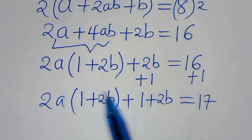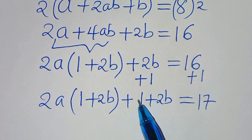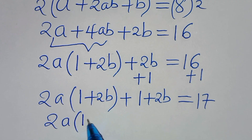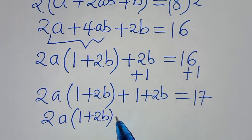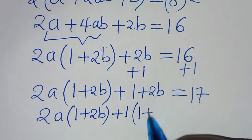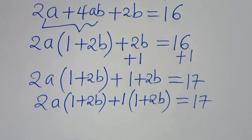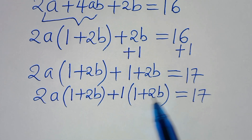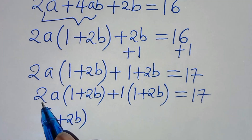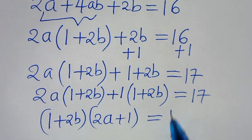We have 1 + 2b here and 1 + 2b here, so we can factor out 1 + 2b, since it is common. So we have 2a(1 + 2b) + 1(1 + 2b) = 17. Now 1 + 2b is common, so we factor it out to get (1 + 2b)(2a + 1) = 17.